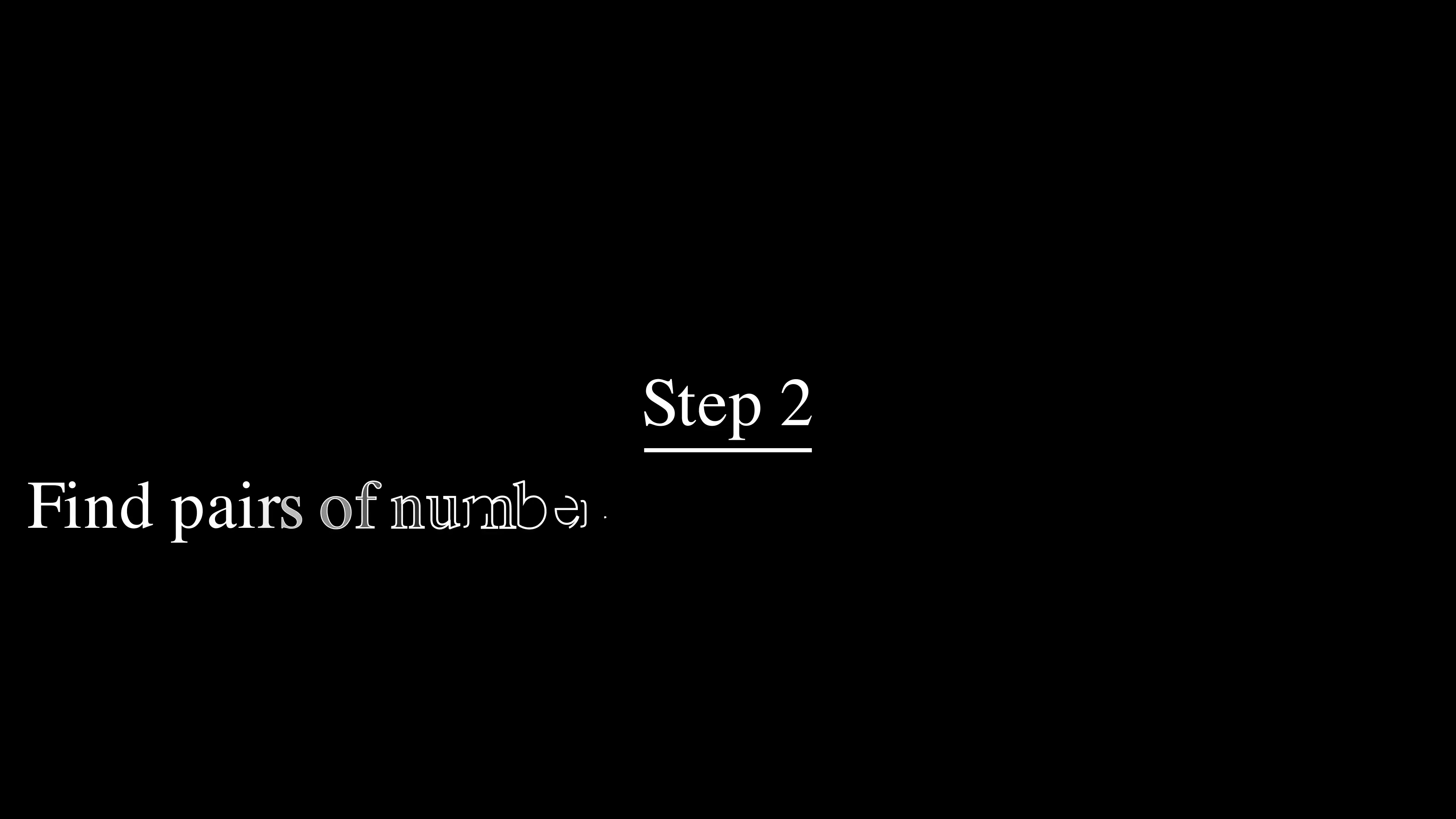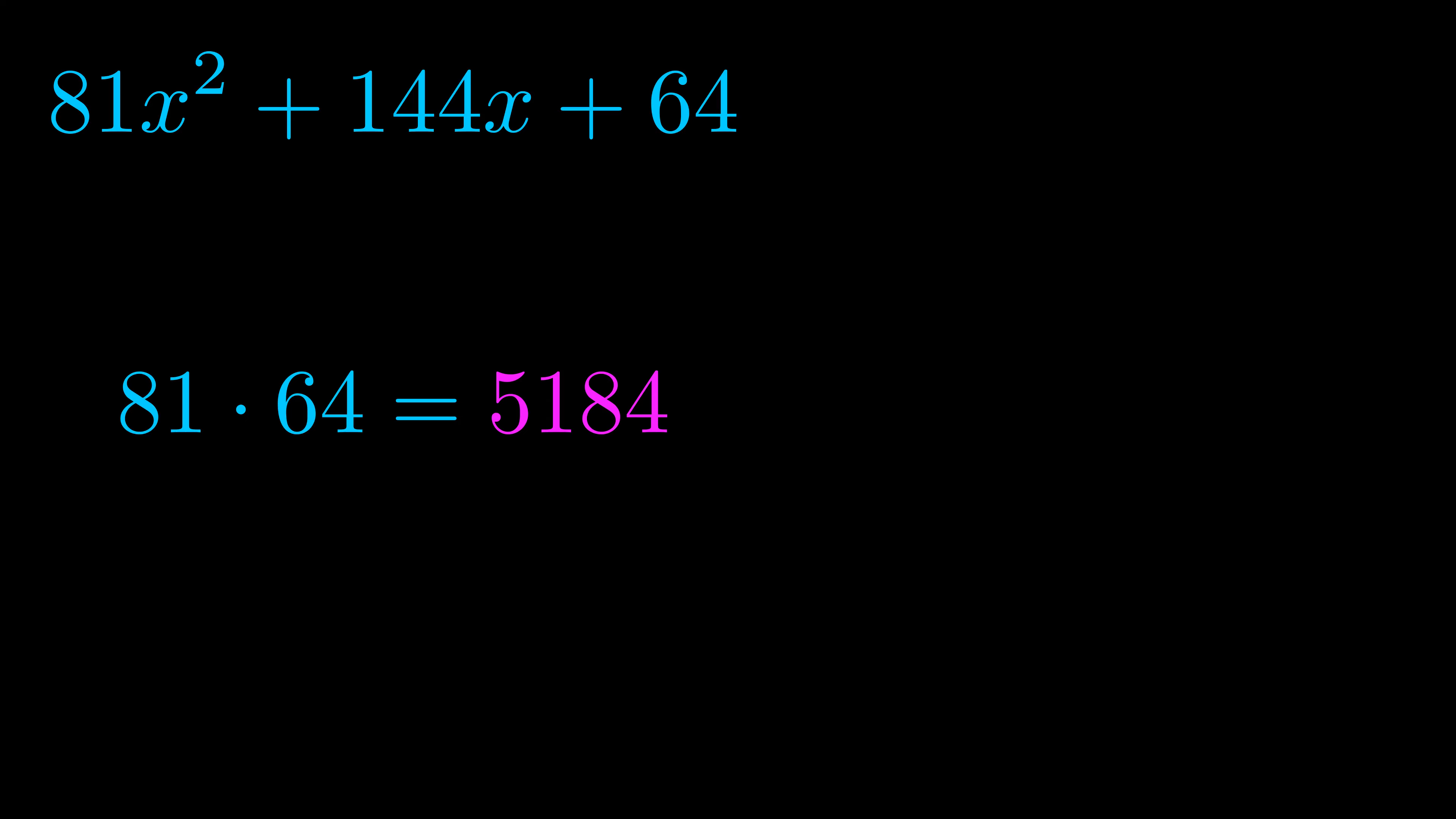Step two is to try to find all of the pairs which multiply to this number. Now it turns out you don't really need to find all of them, but go ahead and write down as many numbers as you can that multiply to the magenta value for now. Pause the video and resume when you're ready to continue.